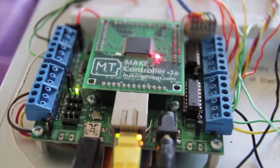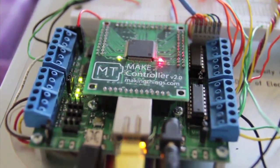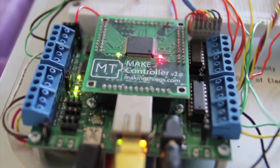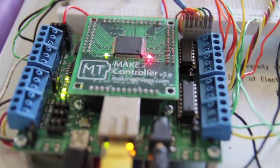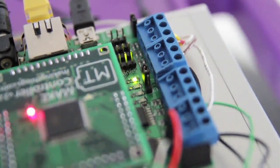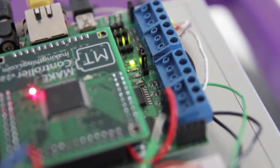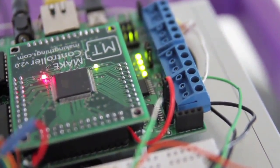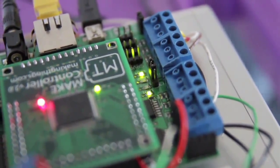What we actually use to control that is this ARM 7 processor that's on the make controller board. And it's a making things board that you can just get for a few hundred dollars. But it's provided for us by the EE department at UW.